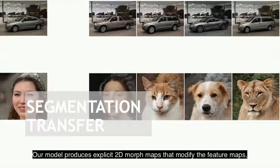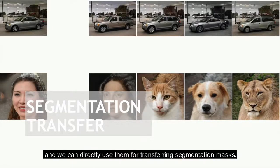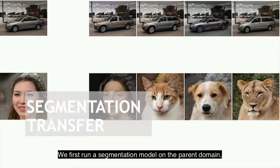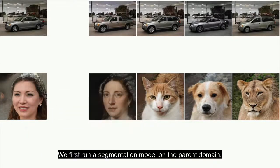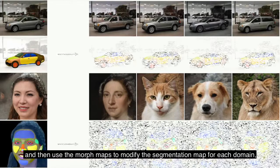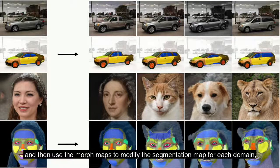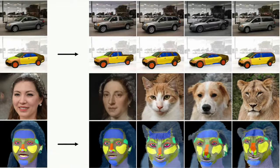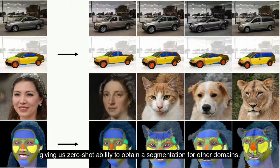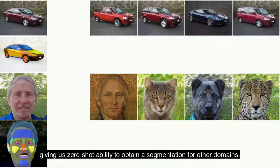Our model produces explicit 2D MorphMaps that modify the feature maps, and we can directly use them for transferring segmentation maps. We first run a segmentation model on the parent domain, and then use the MorphMaps to modify the segmentation map for each domain, giving us few-shot ability to obtain a segmentation for other domains.